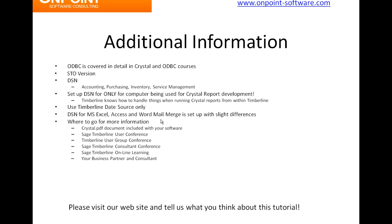Probably most important — where to go to get more information. You've got a Crystal PDF document in your software. If you're in a Sage Timberline module and go to Help Documents, you'll see a Crystal PDF that talks about many important things, including the DSN setup and the integration formulas that tell the Crystal report how to run seamlessly from within the Timberline menus.